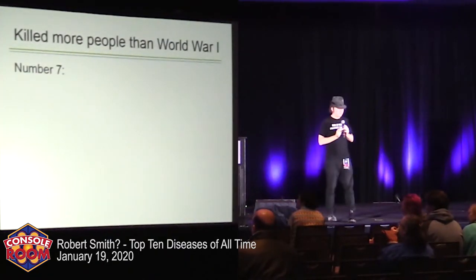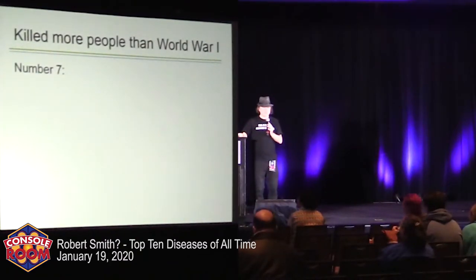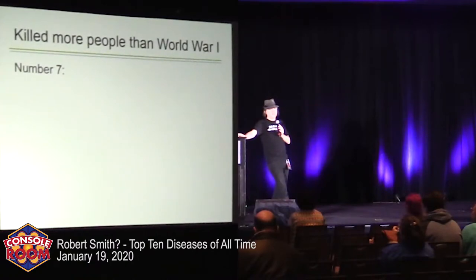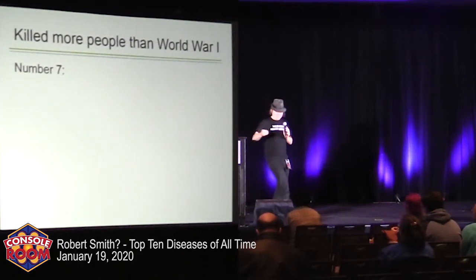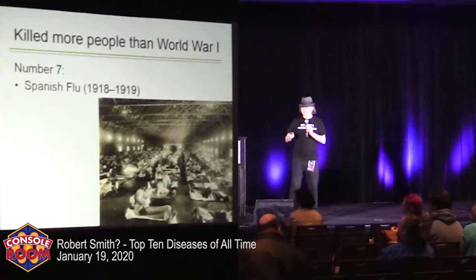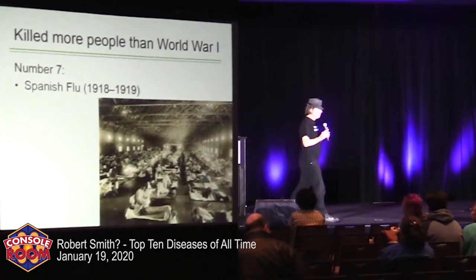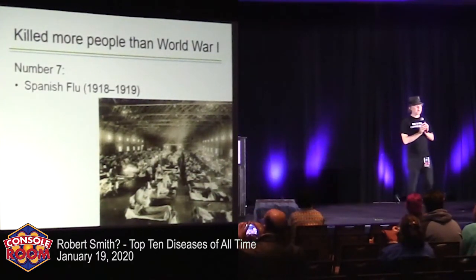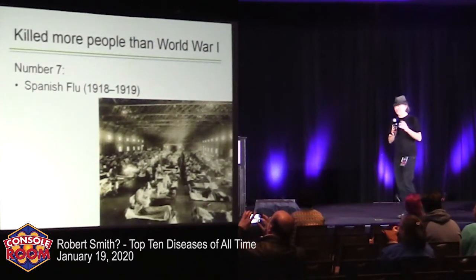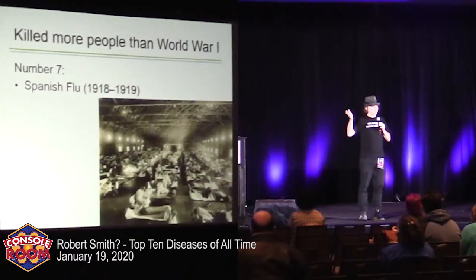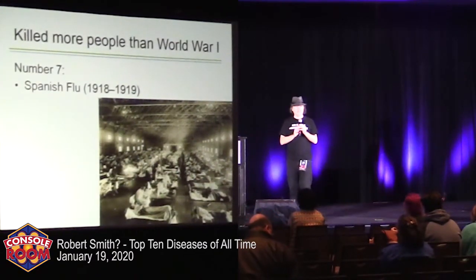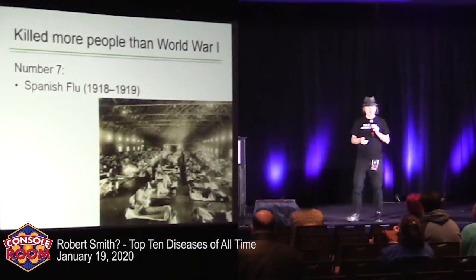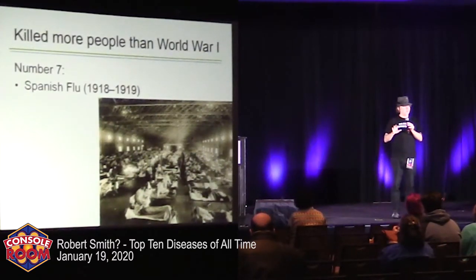Number 7 killed people along with World War I. That's Spanish Flu. Why is it called Spanish Flu? It did not start in Spain — it started in an army barracks in Kansas. The reason is that it began during World War I, and Spain was not involved in the war and hence had no media blackout. Spain was reporting a terrible new flu killing people, while most countries were not reporting it.